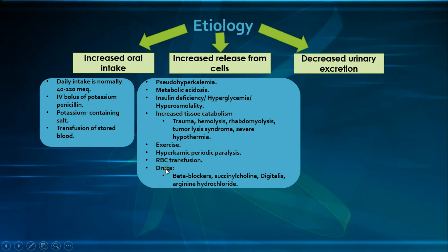Coming to the drugs which cause hyperkalemia, beginning with beta blockers, which cause hyperkalemia through three main mechanisms — all due to the blockage of beta-2 receptors. Blockage of beta-2 receptors will: (1) decrease the sodium-potassium ATPase pump activity, (2) decrease the activity of the sodium-potassium-2-chloride co-transporter, and (3) decrease the release of insulin — all of which cause hyperkalemia.